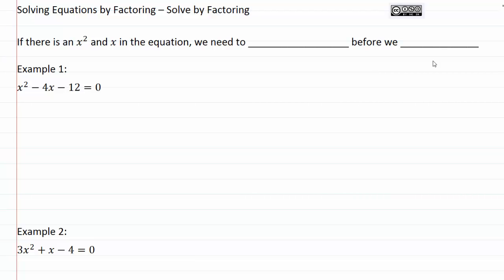Solving equations by factoring - solve by factoring. In the last video we saw that if we have an expression that's equal to zero, we could use our product rule. But that means we need to have some factors to be able to use our product rule. So if our expression is equal to zero and we have an x squared and an x in our equation, we're going to need to factor before we can solve.